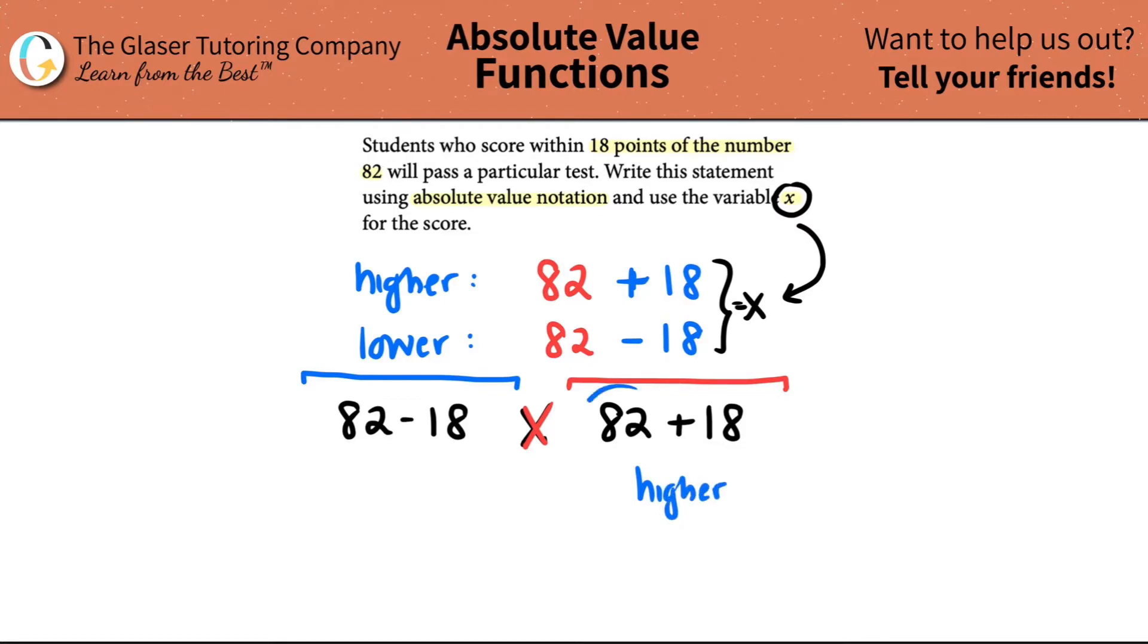This means that this has to be the greatest number, so the greater than sign would go towards this. Remember, the alligator always chomps down on the greater number, and it would be greater than or equal to because it just has to be within. This is the lower limit, so that means that between this and this, x should be higher.